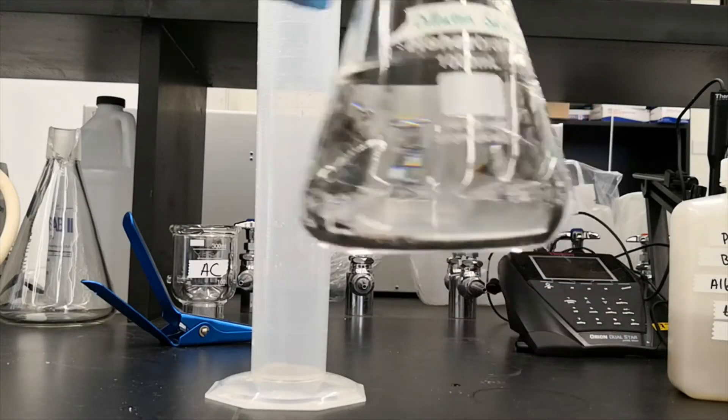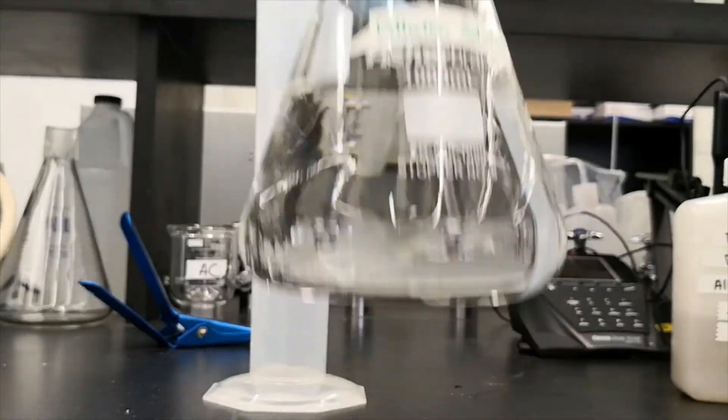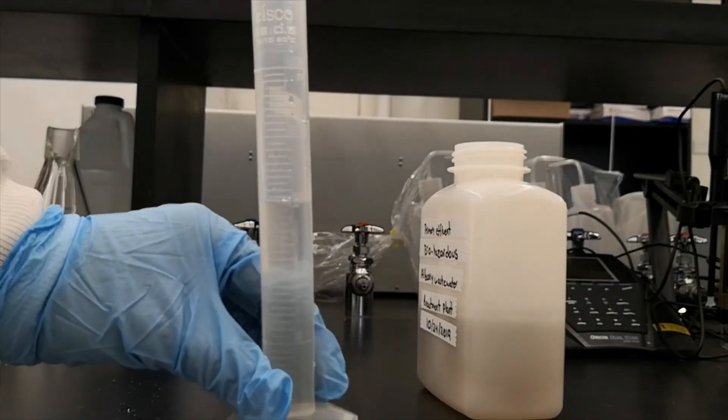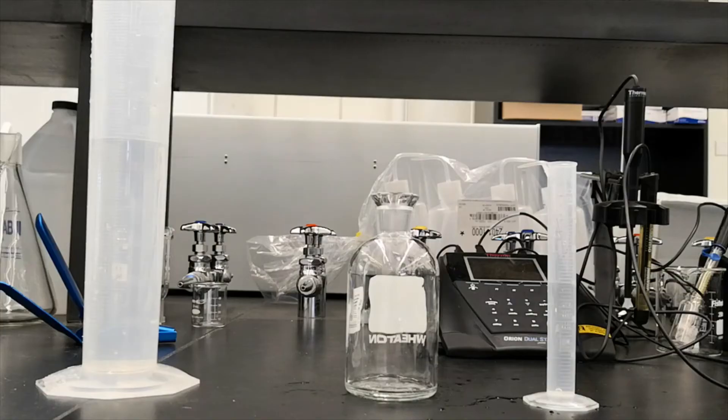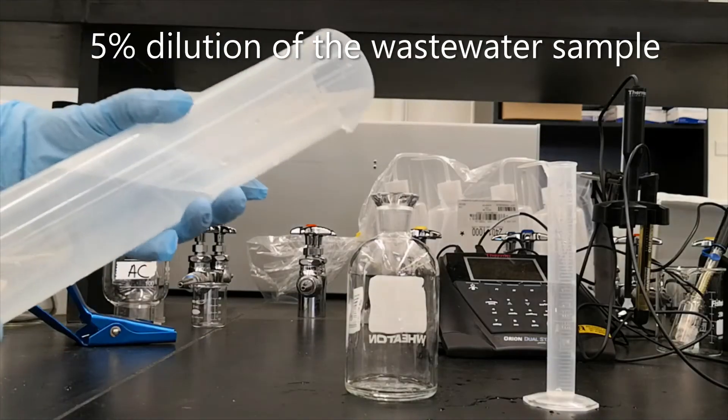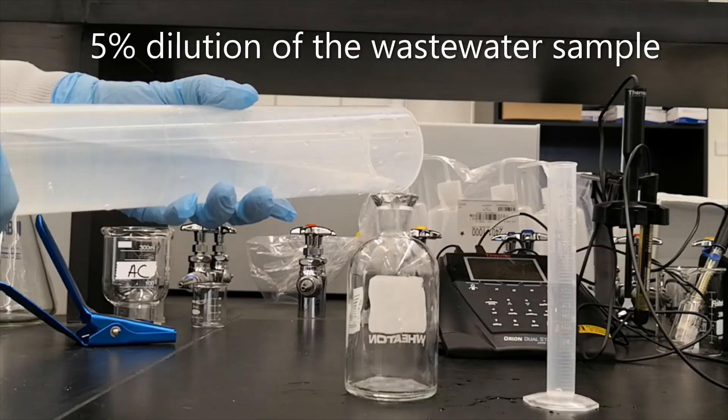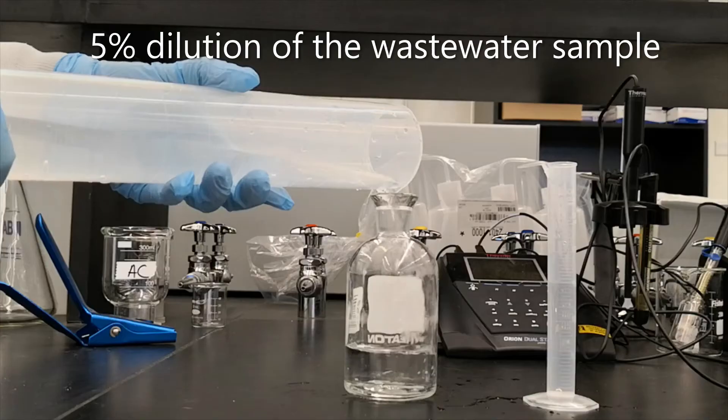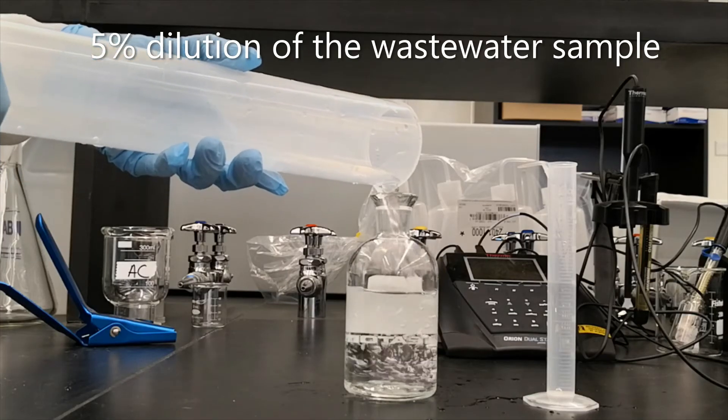And this is the dilution solution. And this is a wastewater sample we collected from wastewater treatment plant. And we are going to mix them in the BOD bottle. In this case, we added 5% of the wastewater sample into the bottle with the dilution solution.